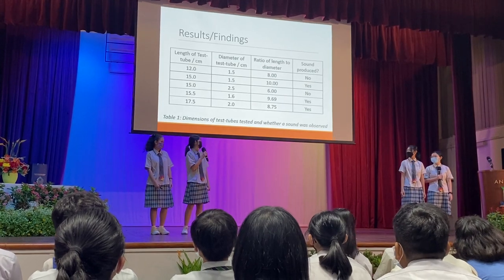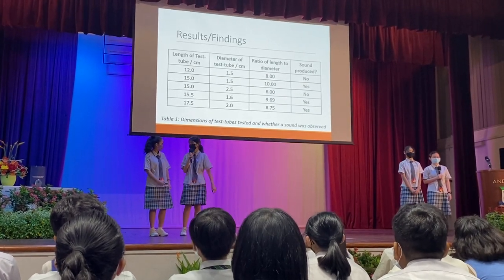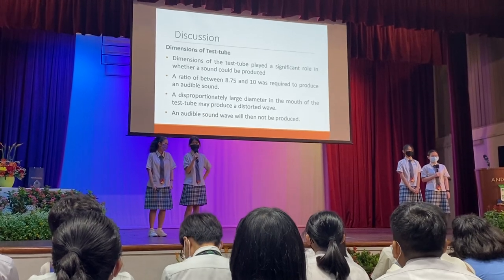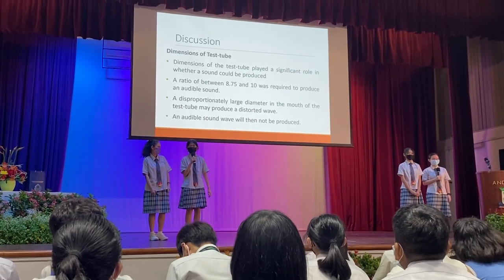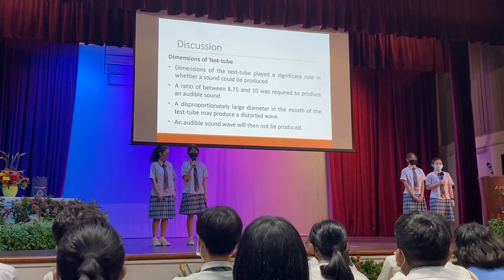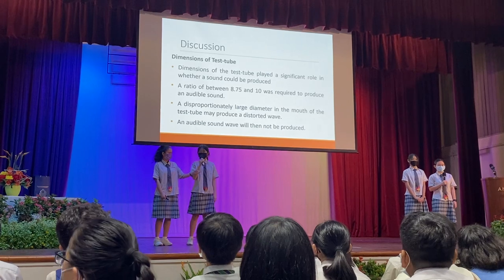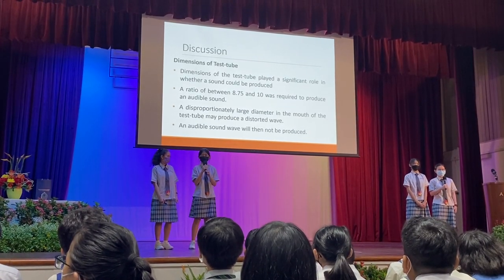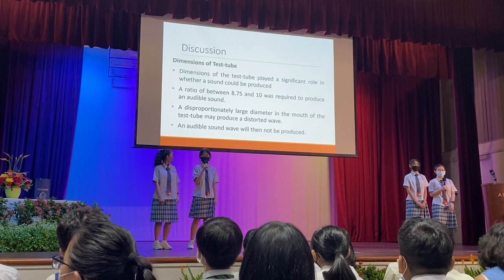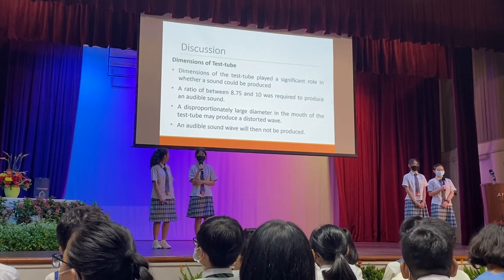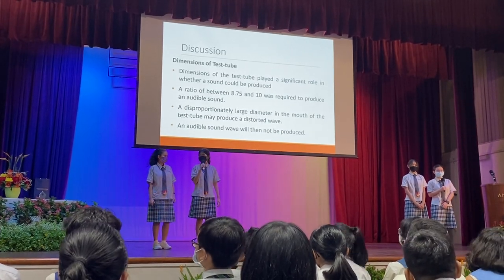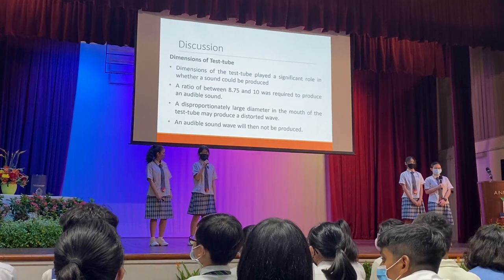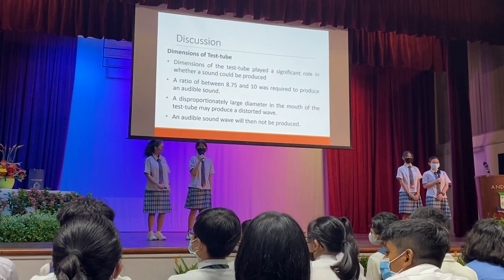Based on our results, we have observed that there are several factors that affect the production of a standing wave with a resonant frequency, such as the dimensions of the test tube. The dimensions of the test tube need to be in a ratio between 8.75 to 10 in order for there to be an audible sound. A large diameter in the test tube may produce a distorted wave, and an audible sound will not be produced.